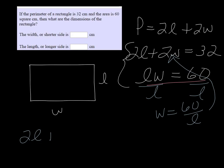So 2l plus 2 times 60 over l is equal to 32.